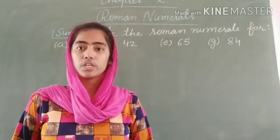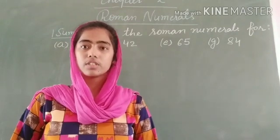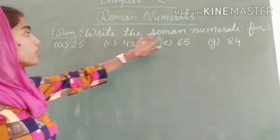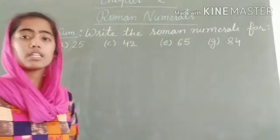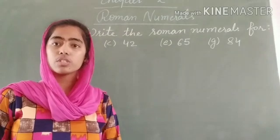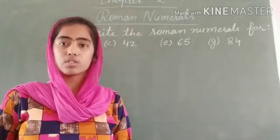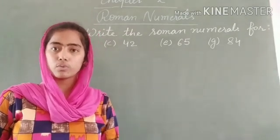Today in this video we are going to start the first problem of the same chapter. The problem statement is: write the Roman numerals for the following numbers. In the book, 9 parts are given. Out of those 9 parts, I will solve 4 for you and the rest you will do by yourself.